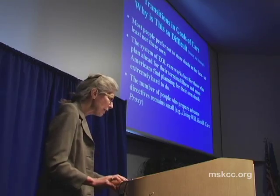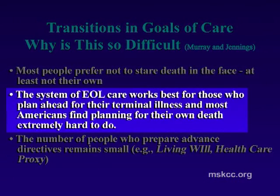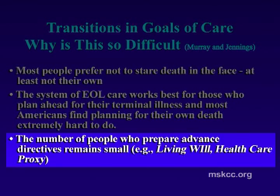Transitions in goals of care are difficult because most people prefer not to stare death in the face. We tend to keep thinking about the future, and a life-threatening diagnosis stops us short — our life story changes and we must develop a different one. The system of end-of-life care works best for those who plan ahead. Most of us find planning for our own death extremely hard, and the number who prepare advance directives — like living wills — remains small. Most important is the healthcare proxy, where you appoint an agent who knows your wishes.